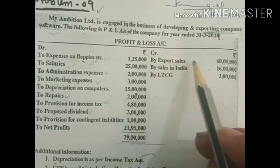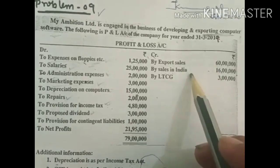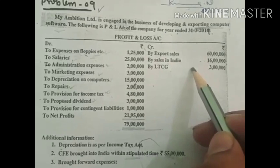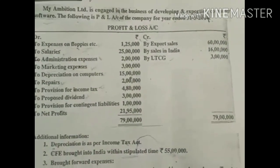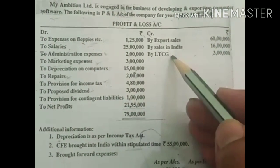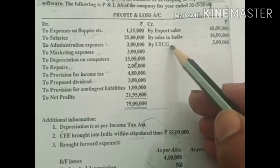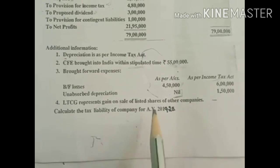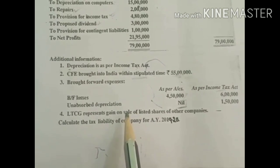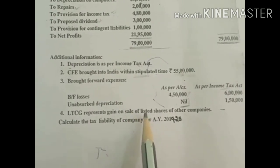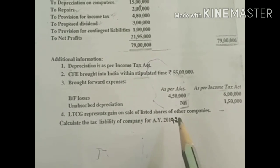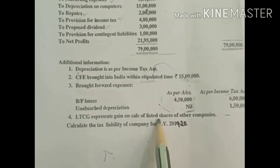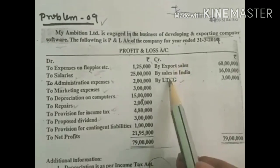On the credit side of the P&L account, export sales of 60 lakh and sales in India of 16 lakh are both considered business income. Long-term capital gain of 3 lakh is non-business income and must be deducted from business income computation. It will appear separately in the main format as long-term capital gain liable for STT, because the fourth adjustment states it represents gain on sale of listed shares. STT — Security Transaction Tax — applies to listed shares, listed mutual funds, and listed UTIs sold through a recognized stock exchange.